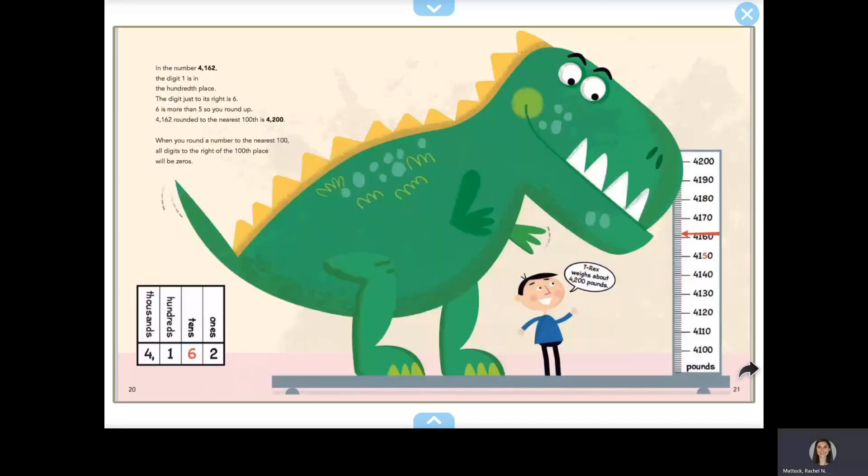In the number 4162, the digit 1 is in the hundreds place. The digit just to its right is 6. 6 is more than 5, so you round up. 4162, rounded to the nearest hundred, is 4200. When you round a number to the nearest 100, all digits to the right of the hundreds place will be zeros.